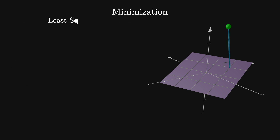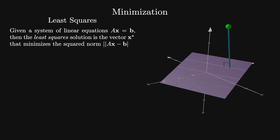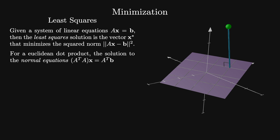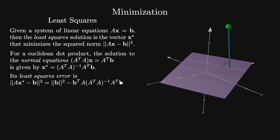In general, if we have a system of equations Ax equals b, then the least squares solution is the vector x* that minimizes the squared norm of Ax minus b. For the Euclidean dot product, this is given by the solution to the normal equations A^T A x equals A^T b, which is x* equals (A^T A)^{-1} A^T b. This has least squares error given by the squared norm of Ax* minus b, equals the squared norm of b minus b^T A(A^T A)^{-1} A^T b.